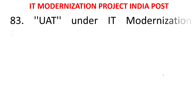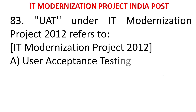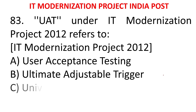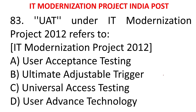MCQ 79: UAT under IT modernization project 2012 refers to - A) User Acceptance Testing, B) Ultimate Adjustable Trigger, C) Universal Access Testing, D) User Advanced Technology. The answer is User Acceptance Testing.